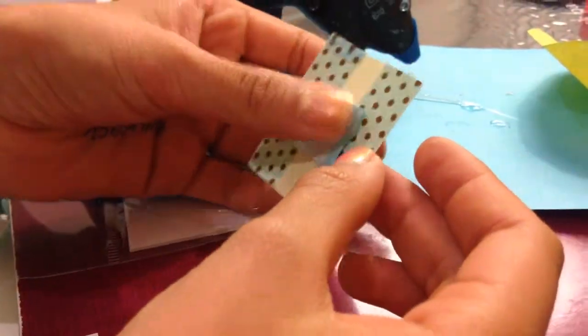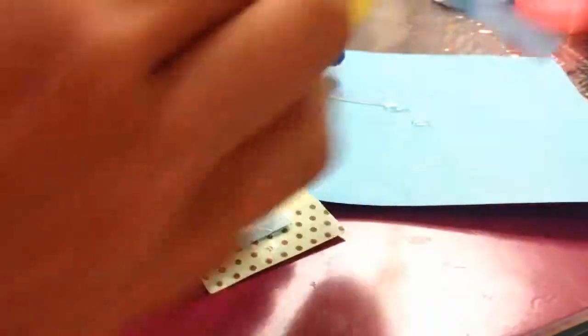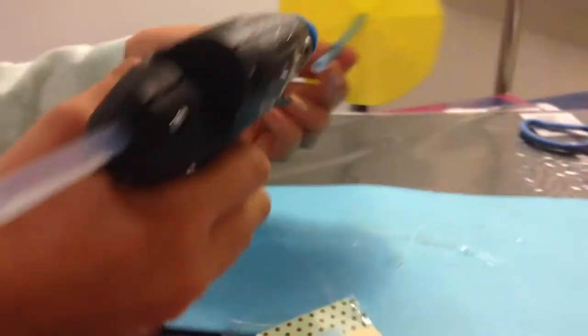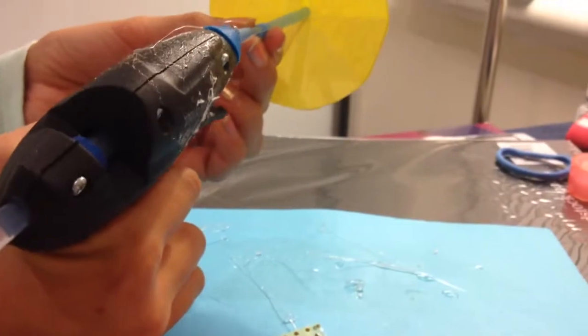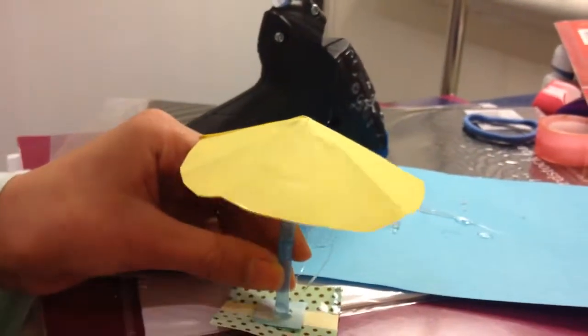Press it down and wait for it to dry. Then, taking your umbrella, put a big dab of glue on the bottom of your straw and press and hold it on your stand.